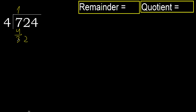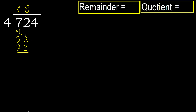Next: bring down 2 to get 32. 4 multiplied by 9 is greater. Multiply by 8: 4 times 8 is 32, which is not greater. Ok, subtract: 32 minus 32 is 0.